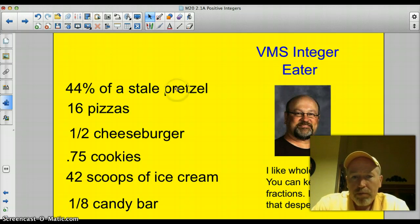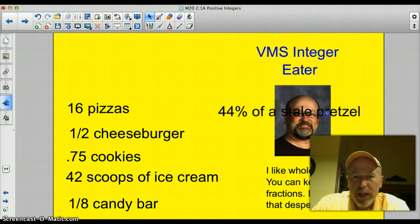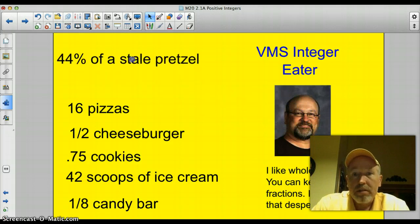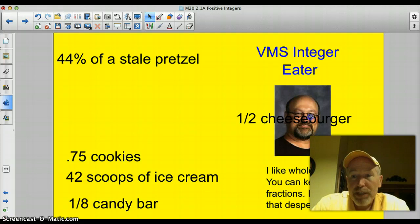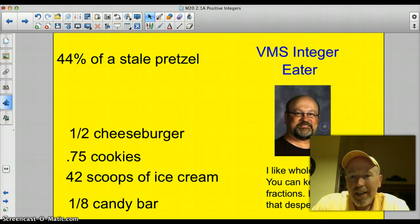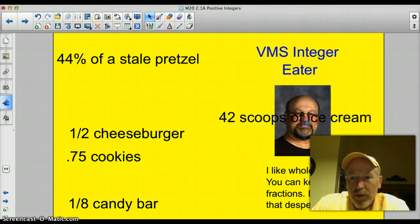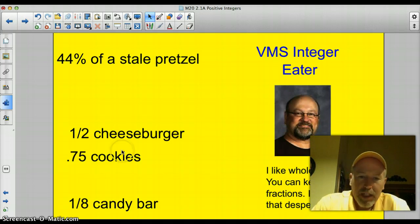A whole apple pie. Eats that baby up. How about 44% of a stale pretzel? He won't eat it. It's because it's not an integer. 16 pieces. Scooby-Doo. Slips them up. How about a half of a cheeseburger? I'm not that desperate. 0.75 of a cookie. No way. 42 scoops of ice cream. He eats those up.